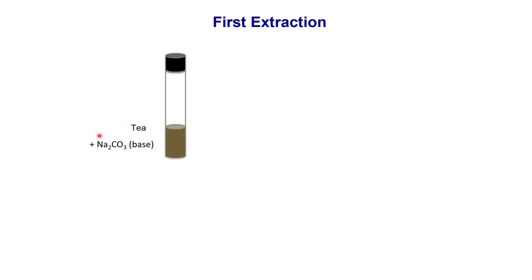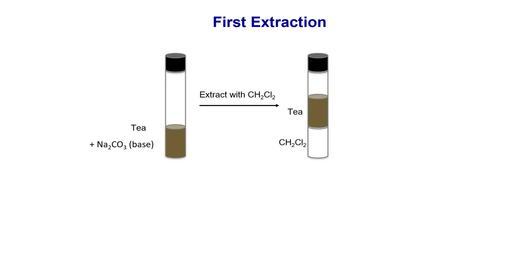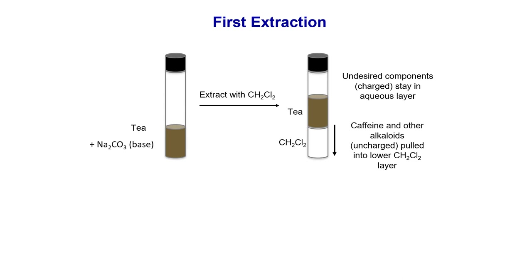You transfer the tea and sodium bicarbonate into a centrifuge tube, then add dichloromethane. Dichloromethane is an organic solvent that will partition with the aqueous solution to form bilayers — two layers that are immiscible and don't mix. The bottom layer is where the uncharged species — alkaloids and caffeine — are pulled into the dichloromethane organic layer. The top layer is the tea solution, where undesired components like tannin salt remain.